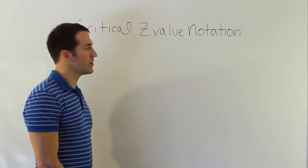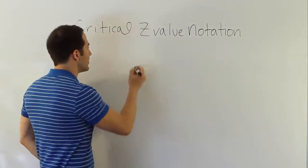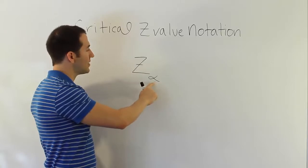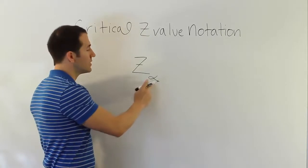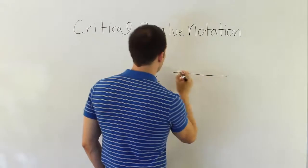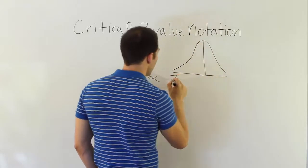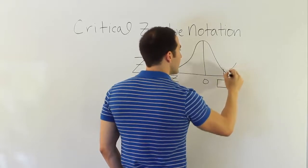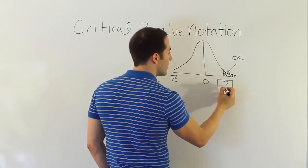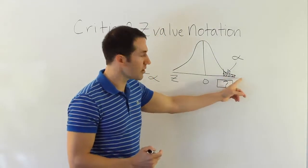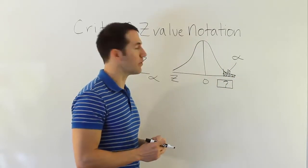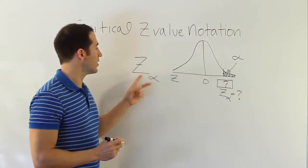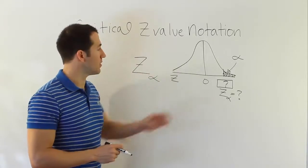We're looking at critical z-value notation. The notation we're talking about is something like z-alpha. What they're trying to get at is they want to know the z-score that will leave alpha area in the upper tail of the bell curve standard normal distribution. We want to know on the z-number line what z-score leaves alpha area in the upper tail beyond that point. That is our z-alpha value.